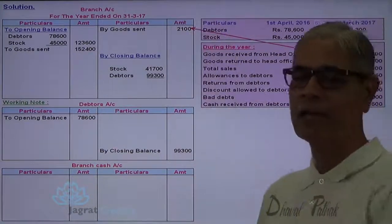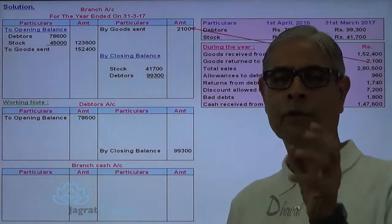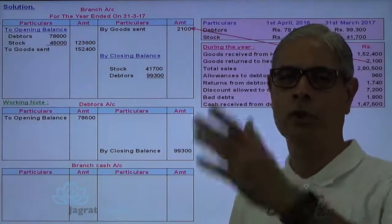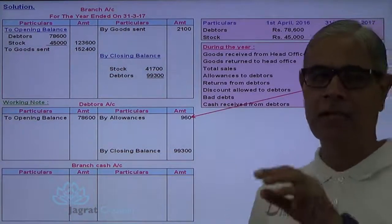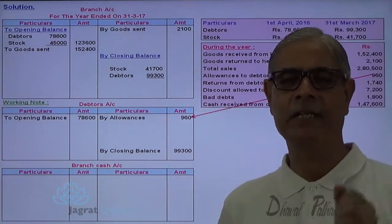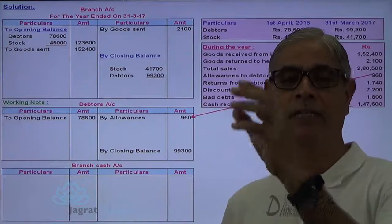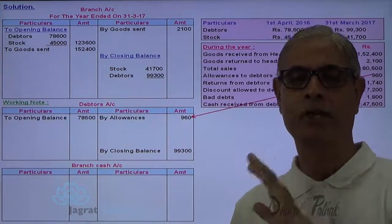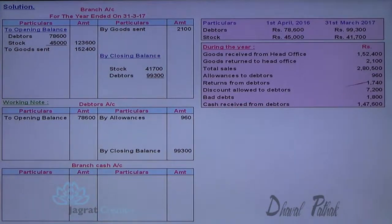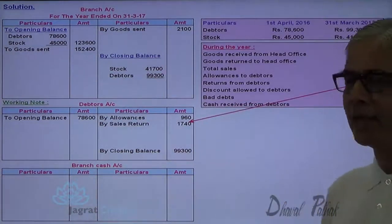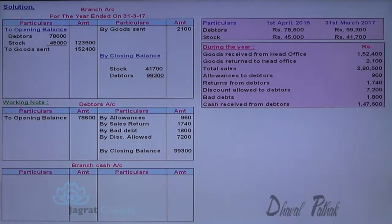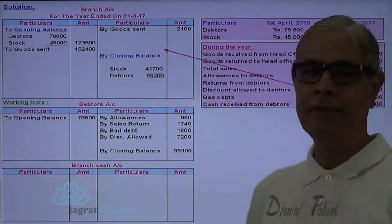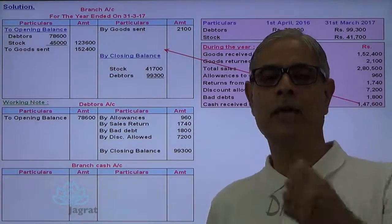Total sales cannot be recorded directly. From total sales I will deduct the credit sales to find out the cash sales, and those cash sales proceeds will be remitted by the branch to HO as per instruction. Allowances granted to debtors are recorded in the debtors account. This is a transaction between branch and debtors, not between HO and branch, so it is not recorded in the branch account. Returns from debtors and sales returns are recorded on the credit side of the debtors account in the working note. Discount allowed and bad debts are also on the credit side of the debtors account. Cash receipts from debtors are also remitted.